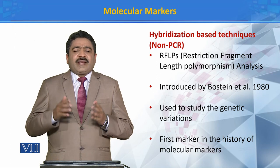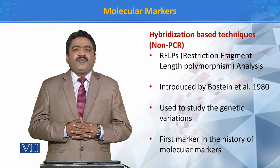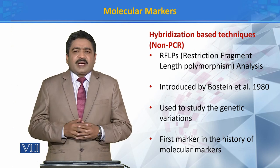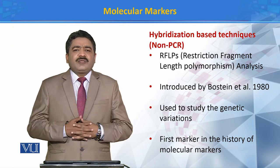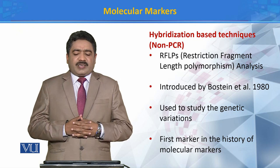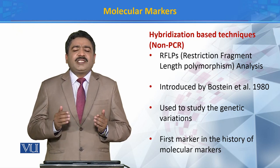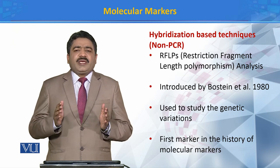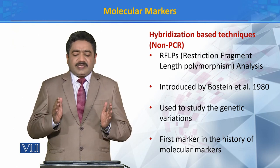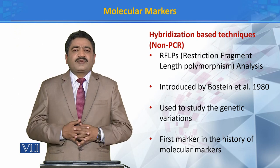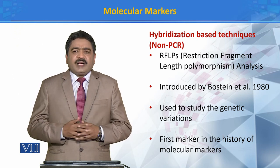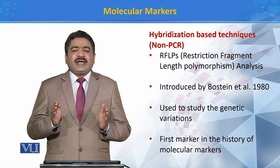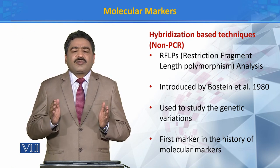جو next type of markers ہیں وہ non-PCR based markers ہیں۔ اس میں ایک important type ہے — Restriction Fragment Length Polymorphism (RFLP)۔ یہ technique 1980s کے اندر Boston نے introduce کروائی تھی۔ اس technique کے ذریعے ہم organisms کے اندر genetic variation کو study کرتے ہیں۔